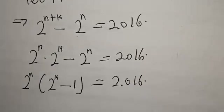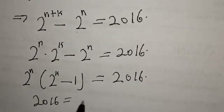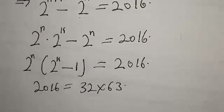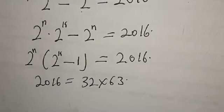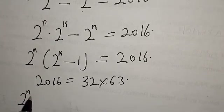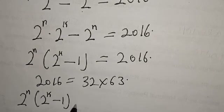Now, 2016 can be expressed as 32 times 63. This implies that we have 2 raised to power n into 2 raised to power k minus 1 is equal to 32 times 63.